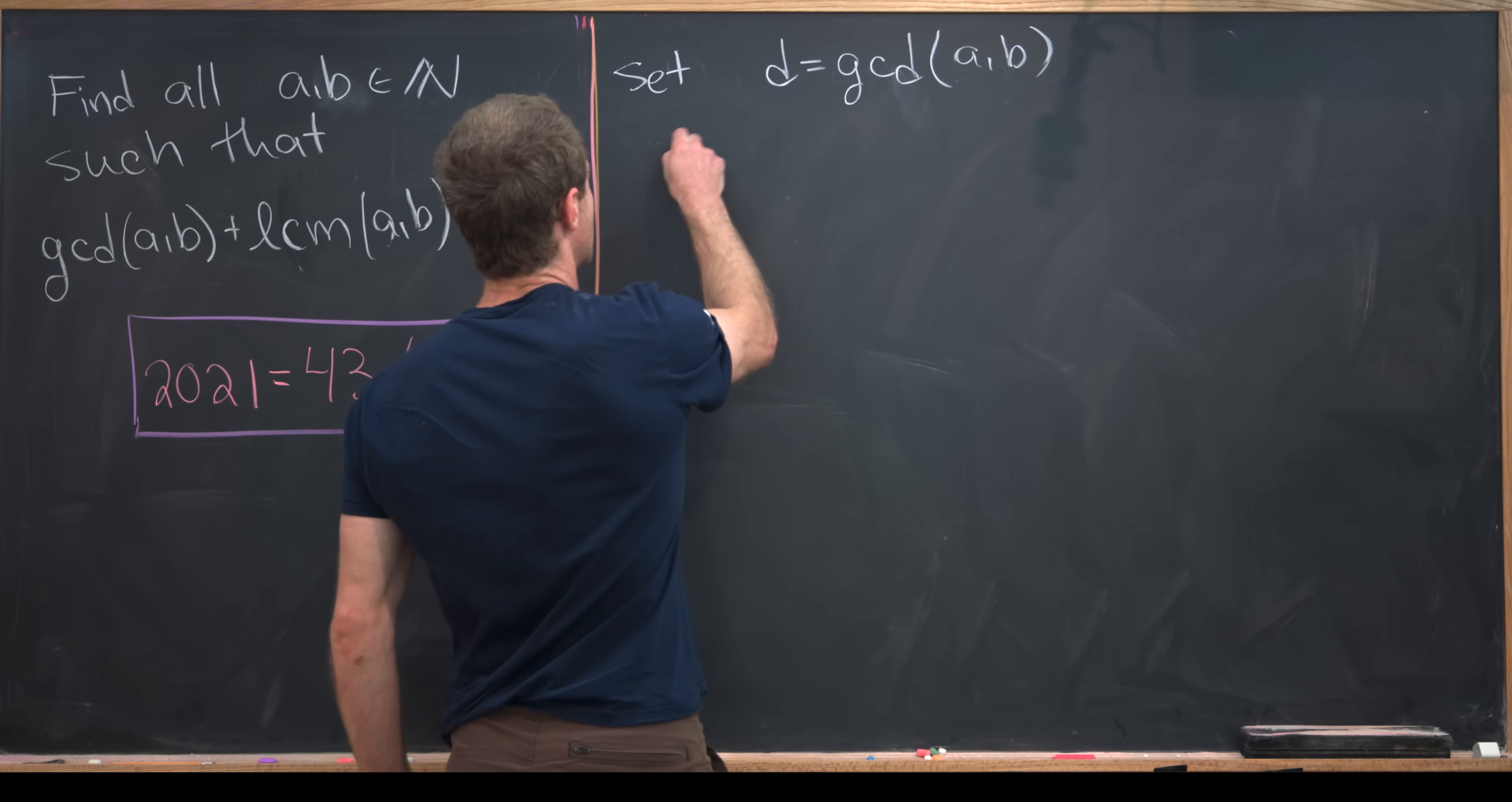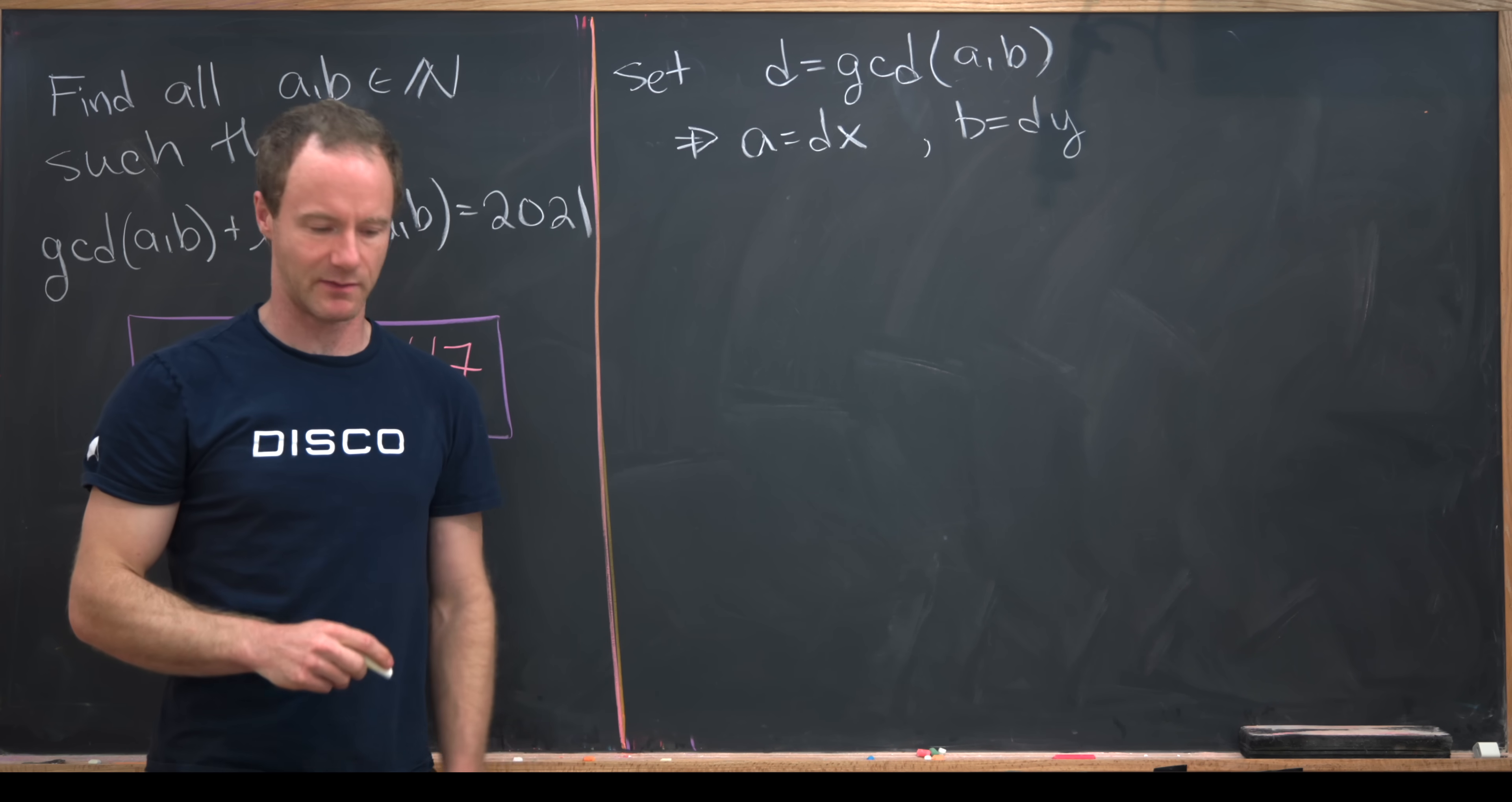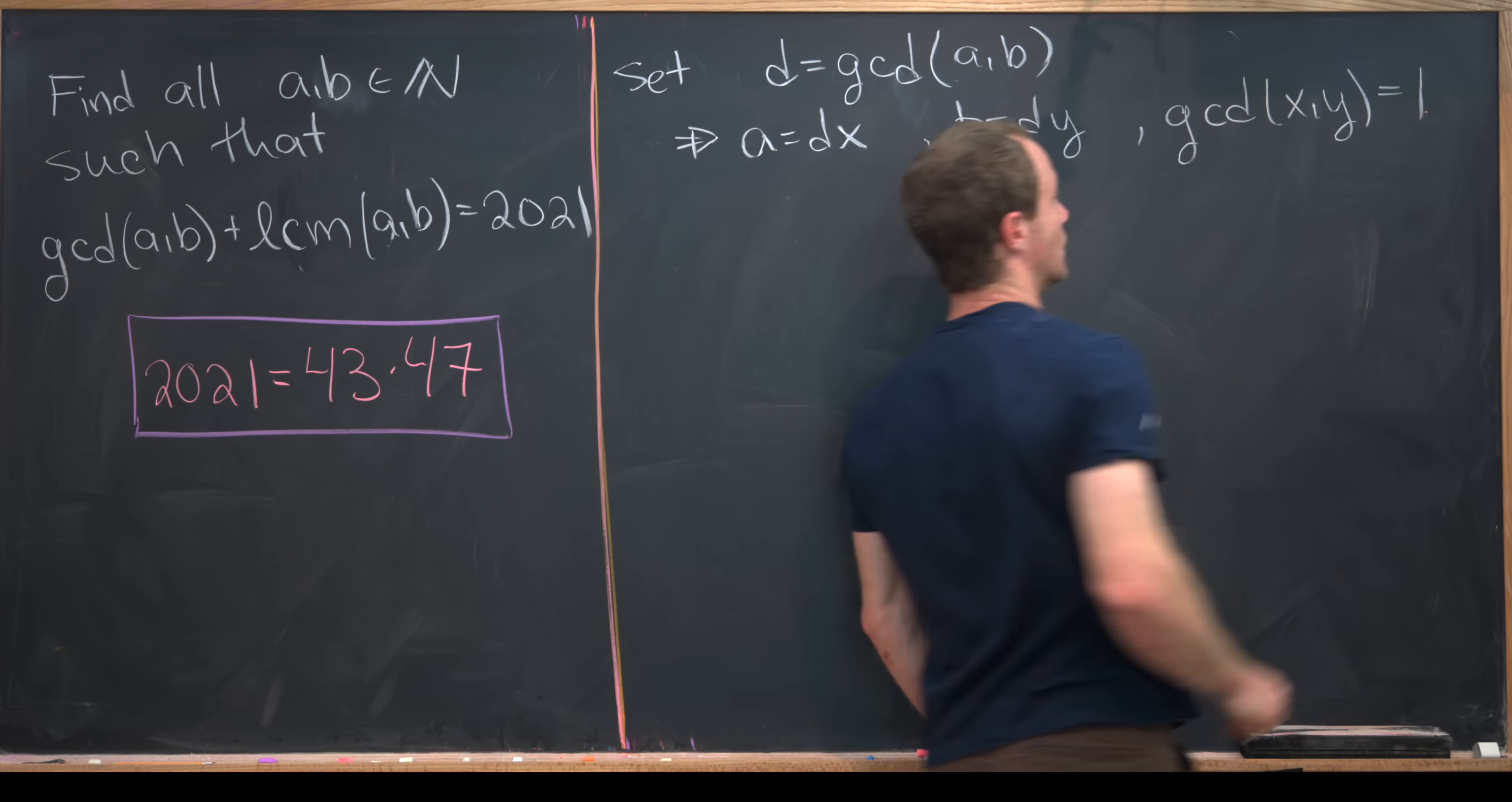What does that mean? That means first of all that it's a common divisor. In other words, A can be written as D times X and B can be written as D times Y. That makes it a common divisor. But what makes it the greatest common divisor? An equivalent statement would be to say that the GCD of these numbers X and Y is equal to 1.